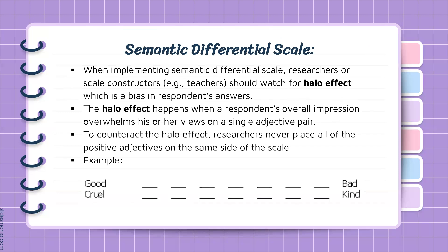When implementing the semantic differential scale, researchers have to watch for the halo effect, which is the bias in respondents' answers. The halo effect happens when a respondent's overall impression overwhelms his or her views of a single adjective pair. For example, a student sees his teacher as beautiful, and then also sees his teacher as kind and intelligent — so his overall impression overwhelms his specific views. To counteract the halo effect, researchers never place all the positive adjectives on the same side of the scale. For instance, 'good' is on the left side in the first pair, while in the second pair (cruel/kind), the positive adjective 'kind' is on the right side.